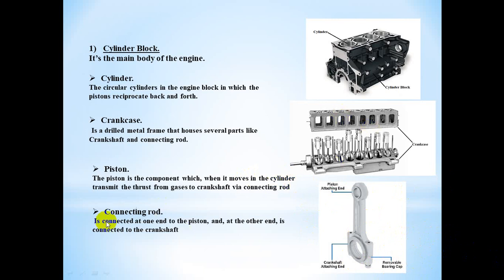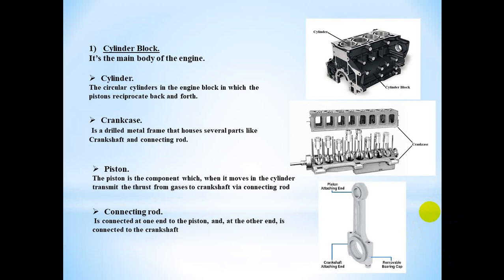Number four: the connecting rod. As shown in this figure, the connecting rod is connected at one end to the piston and at the other end to the crankshaft. Its function is to convert the reciprocating straight-line movement of the piston into the continuous circular movement of the crankshaft. It is made from cast aluminum alloy.